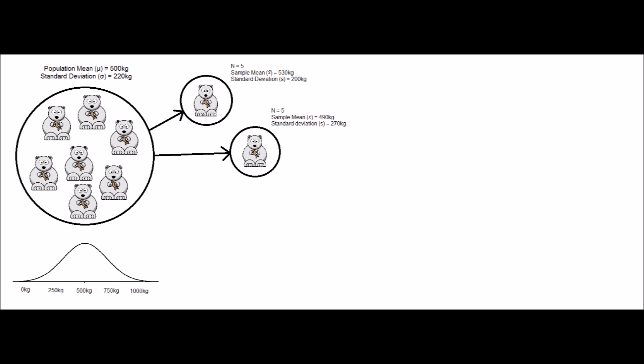One of the best ways a researcher can try to improve their certainty in their estimate is to increase the size of the sample. In this case, we could choose to weigh 20 polar bears instead of just 5.